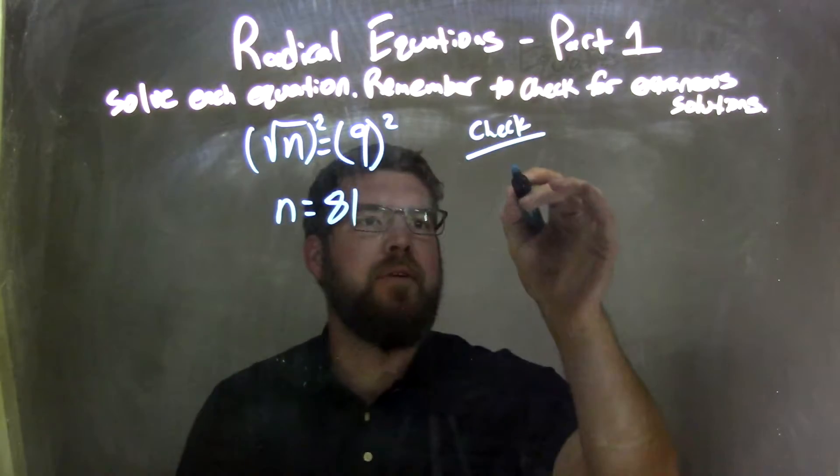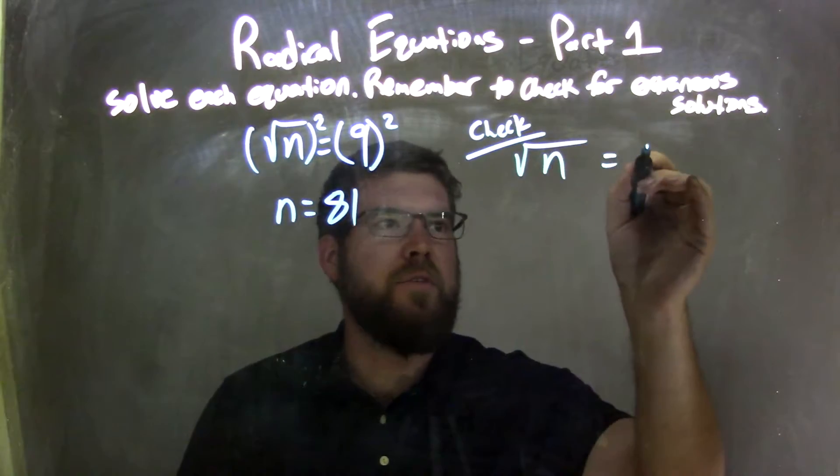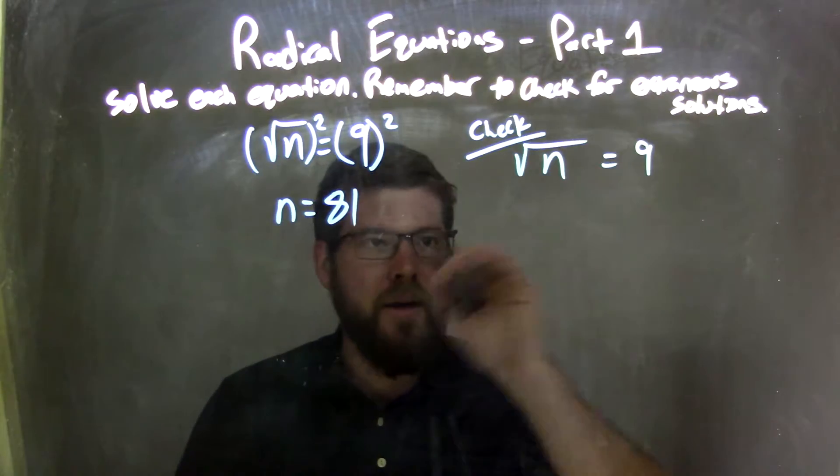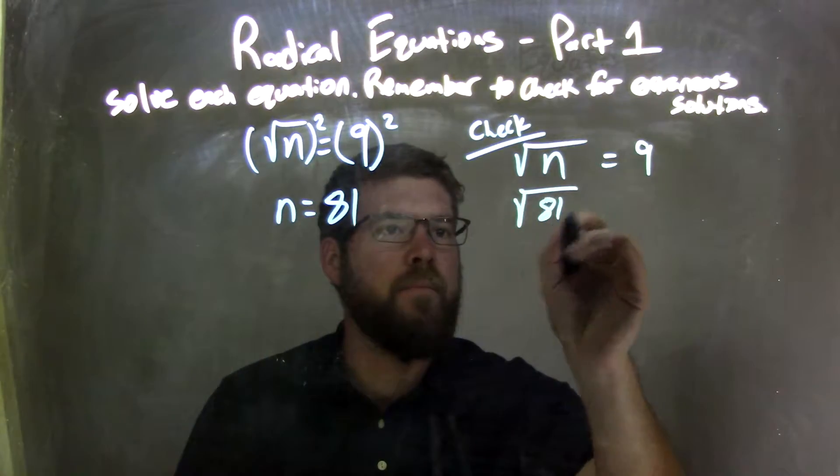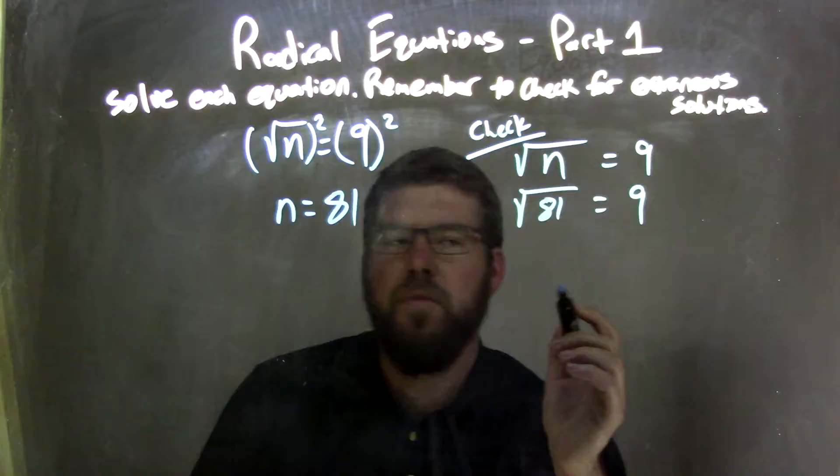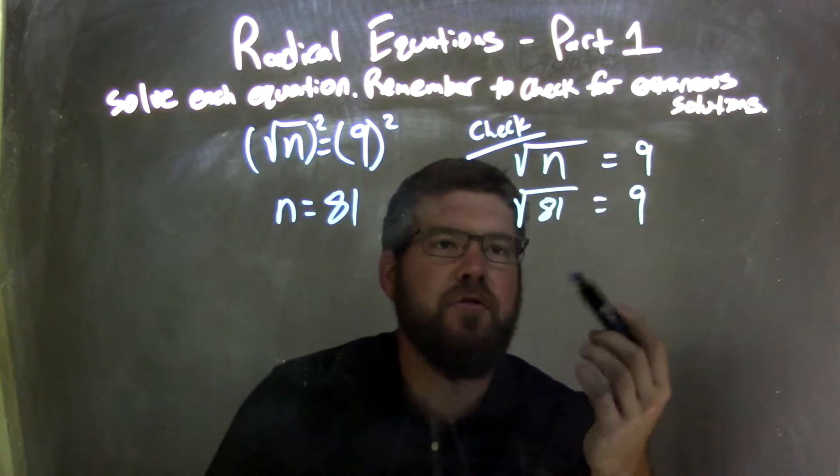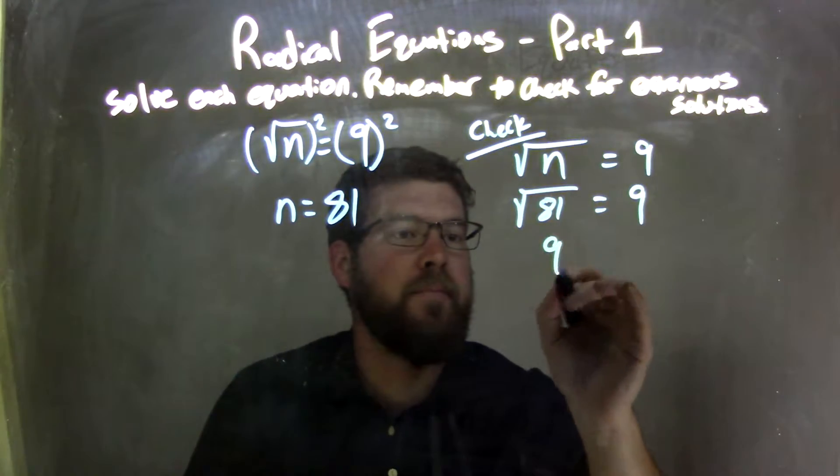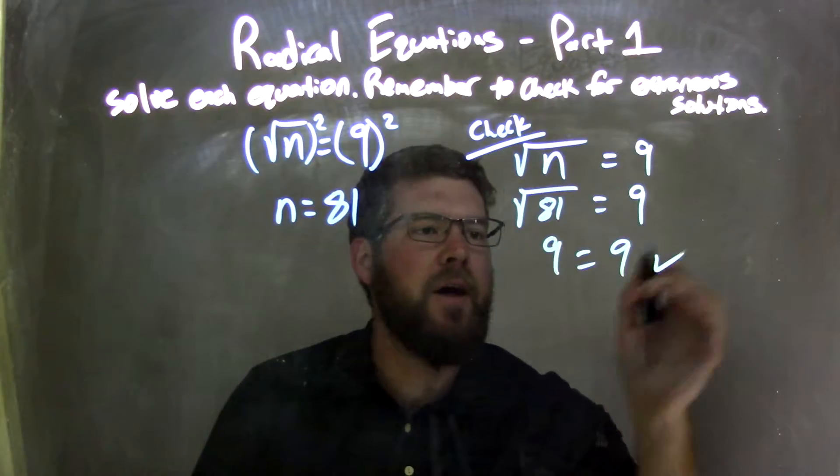So, to check here, I'm going to take my original equation, the square root of n equals 9, plug 81 in for n, substitute that in, and then simplify. The square root of 81 is just 9. And 9 does equal 9. That's true.